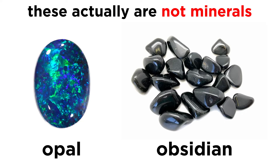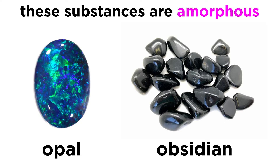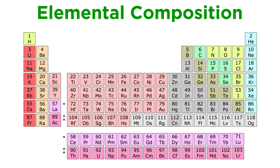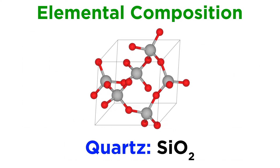Some of the items you might find at a local rock or gem shop, like opal or obsidian, aren't actually minerals at all. They fail to qualify because their atomic structures are amorphous, meaning that they lack a repeating three-dimensional crystal lattice. Another defining characteristic of a mineral is its elemental composition, which is represented by a chemical formula that represents one formula unit of the mineral's structure.